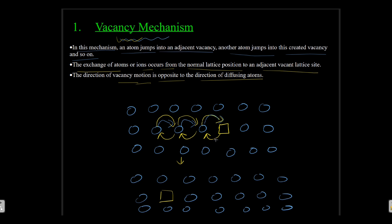So in the vacancy mechanism, one vacancy point defect exists. The adjacent atom takes its position and a new vacancy is created. Then another adjacent atom takes that vacancy and another is created. In this way, atoms diffuse from one point to another, while the vacant site is seen to move in the opposite direction.